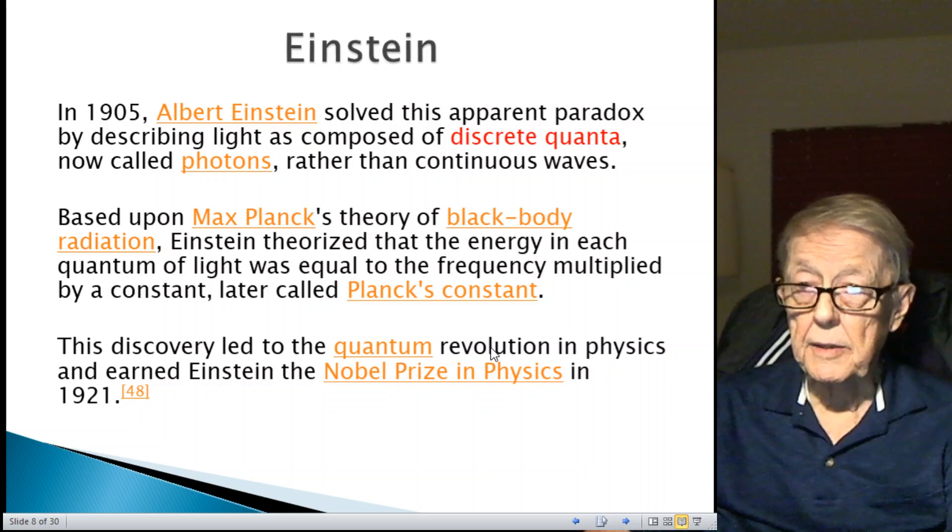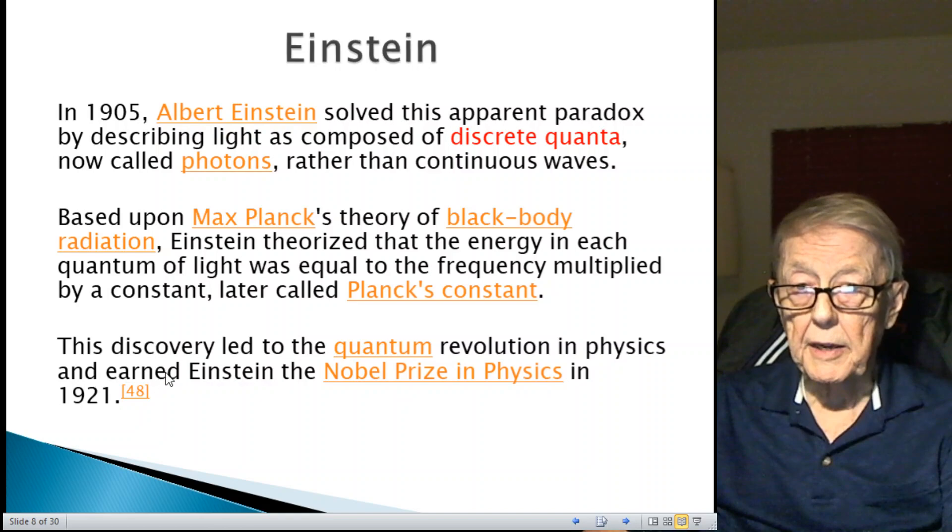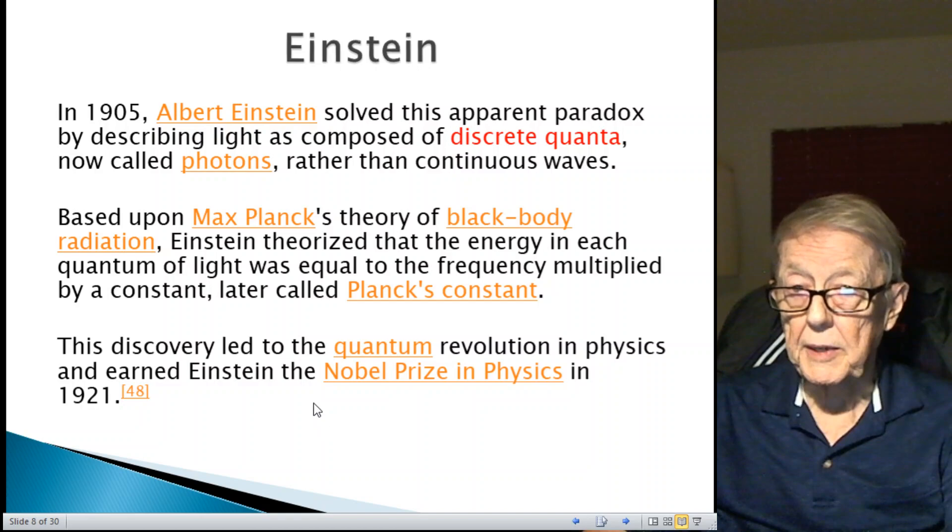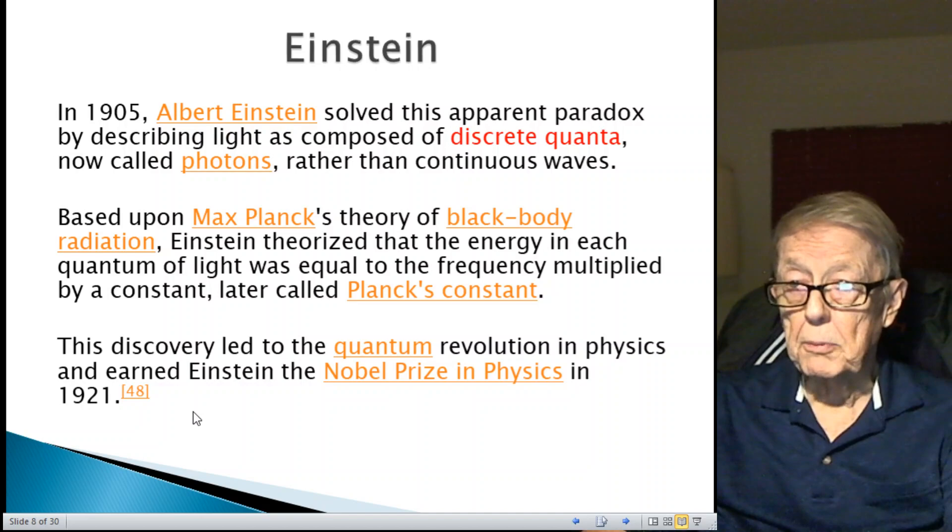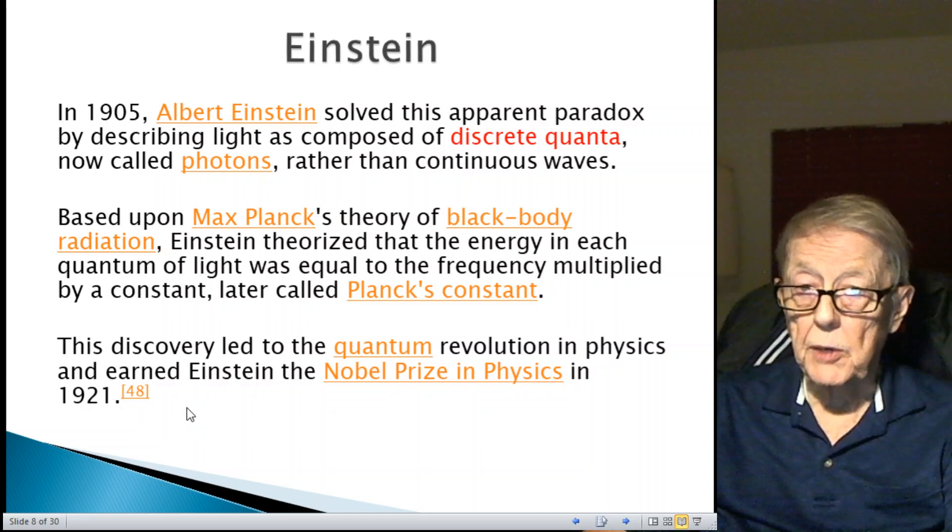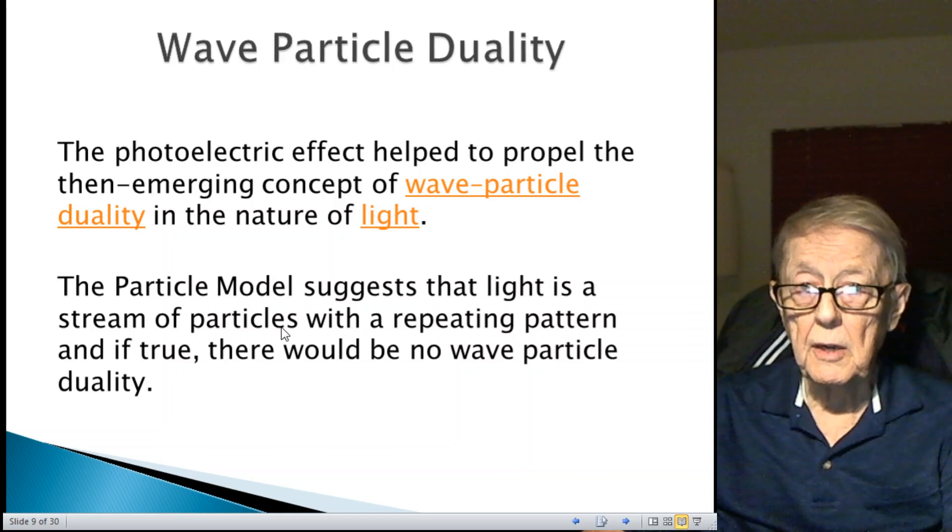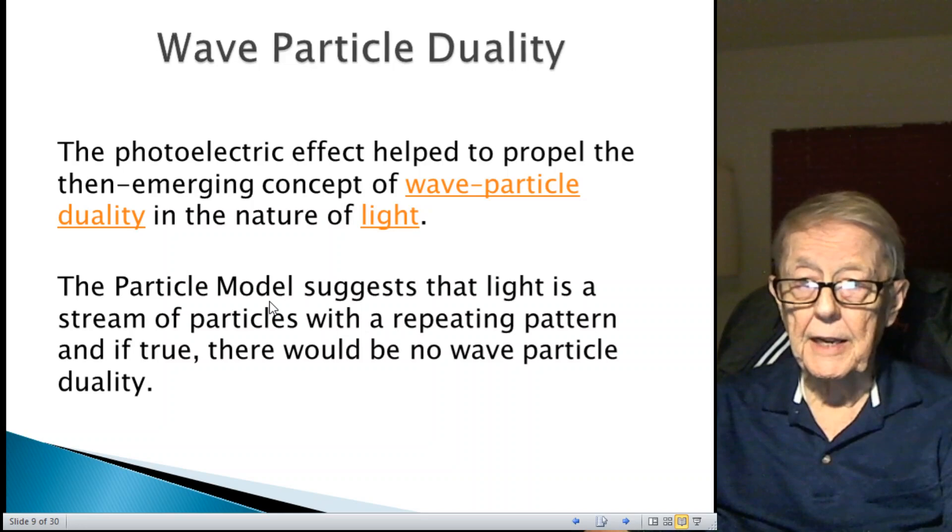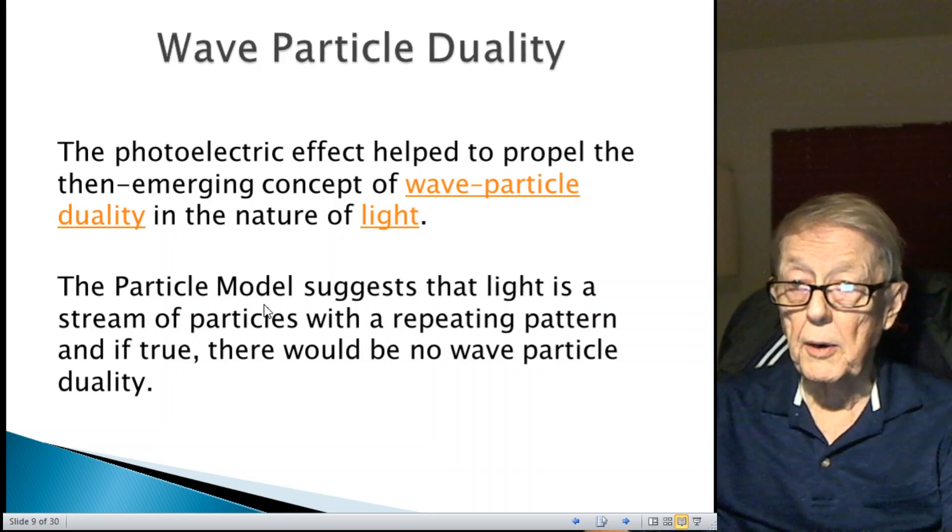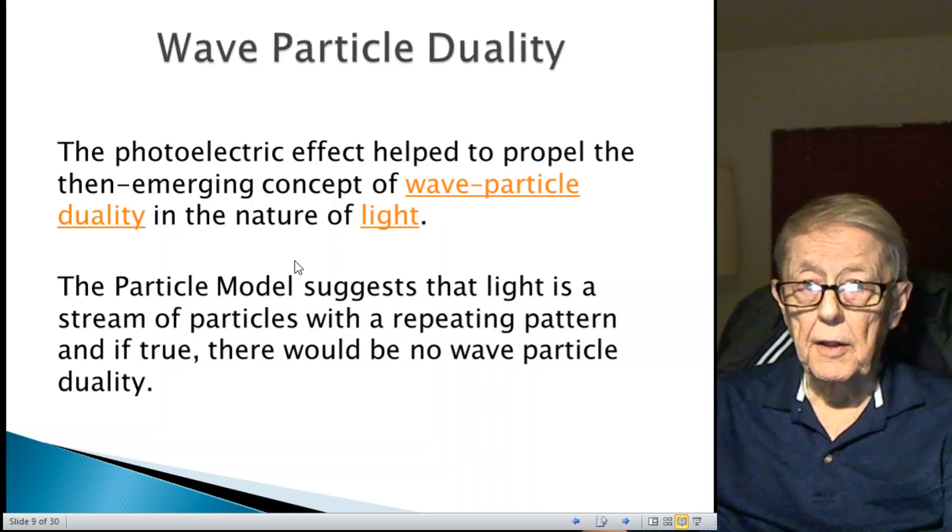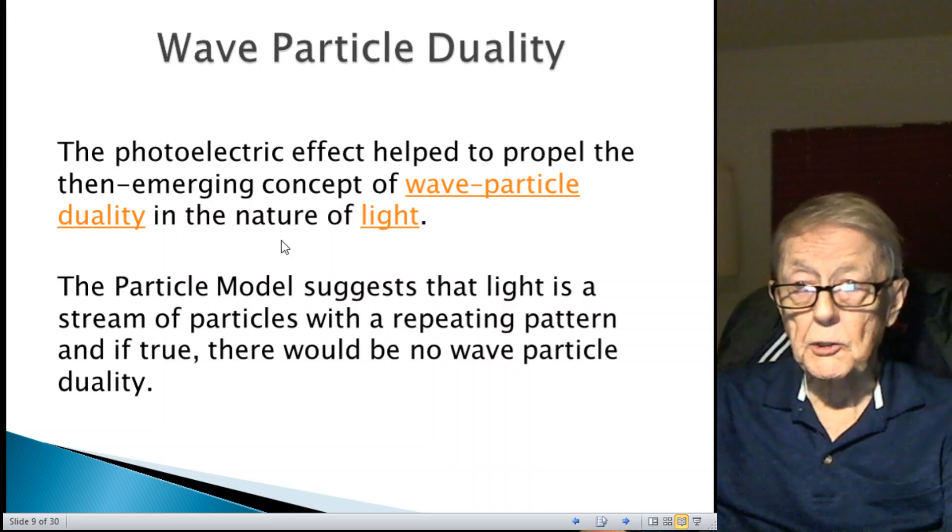Here's the big change in physics. This discovery led to the quantum revolution in physics. I know quantum mechanics, quantum theory, whatever, they're very confusing. But this paper earned Einstein the Nobel Prize in physics in 1921. He never got a Nobel Prize for his theory of relativity, either special or general. But it brings about the concept of wave-particle duality.